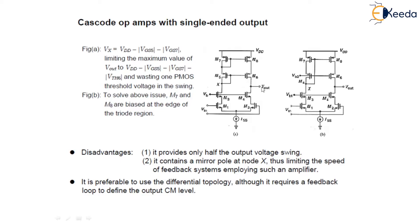Now, Vx equals Vdd minus Vgs5 minus Vgs7. This limits the value of Vout to Vdd minus Vgs5 minus Vgs7 minus Vth6. Thus, it is wasting one PMOS threshold voltage in the swing.